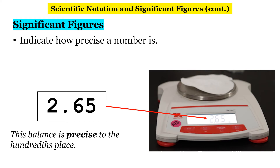Next, let's talk about significant figures. Significant figures indicate how precise a number is. If you look at the balance shown in the picture here, the number reads 2.65. The precision of our balance is to the hundredths place, so instead of just writing 2 or 3, I would write out 2.65 because my balance is telling me exactly what that mass is to the hundredths place. That's how precise our equipment is.